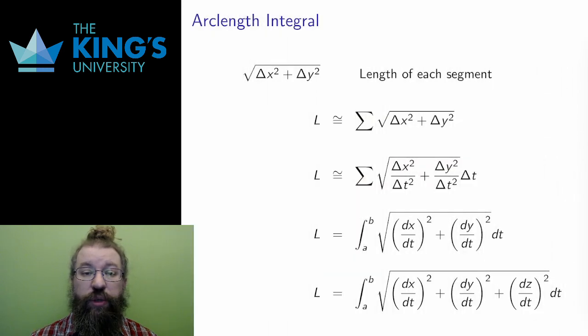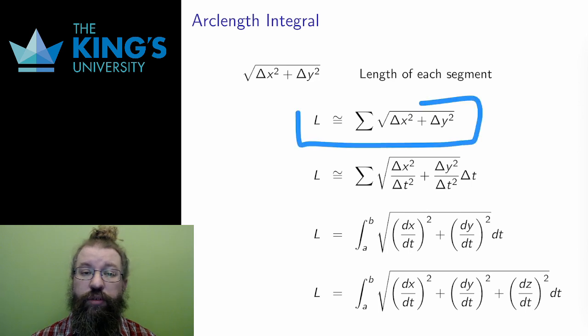This describes each segment so that the approximation to length is the sum over all the segments. However, for a curve, the segments depend on time. So I can introduce a change in time, delta t, over which the changes in x and y happen. I can multiply and divide by this delta t, taking the division into the square root, and this produces an approximation.